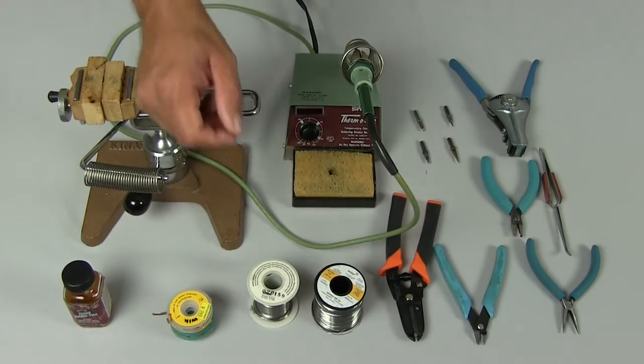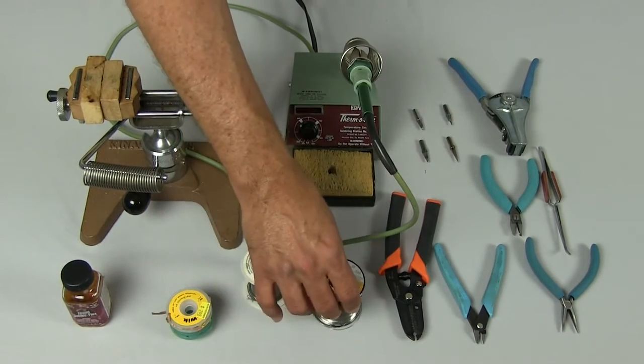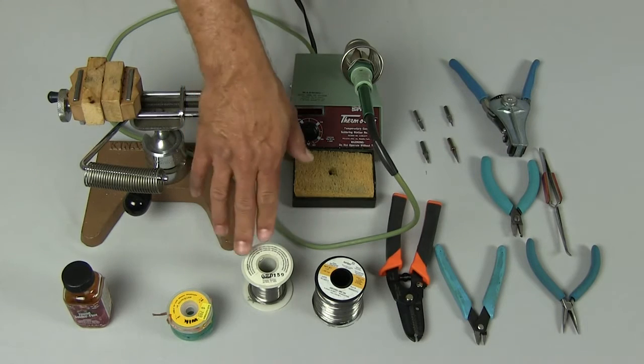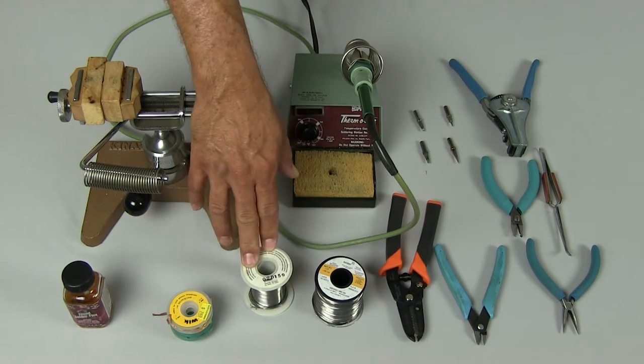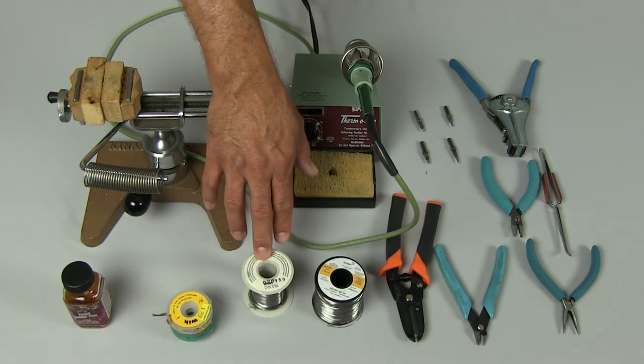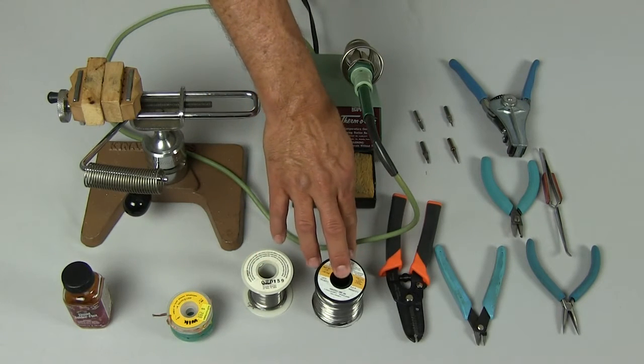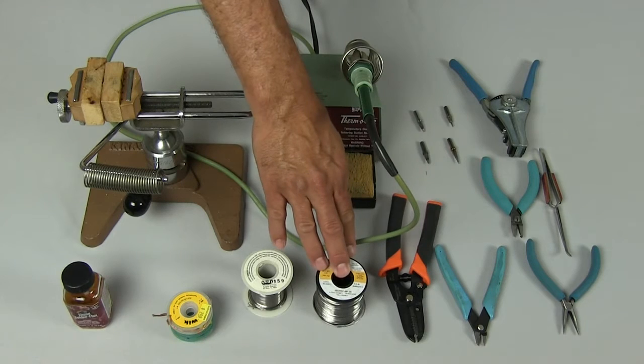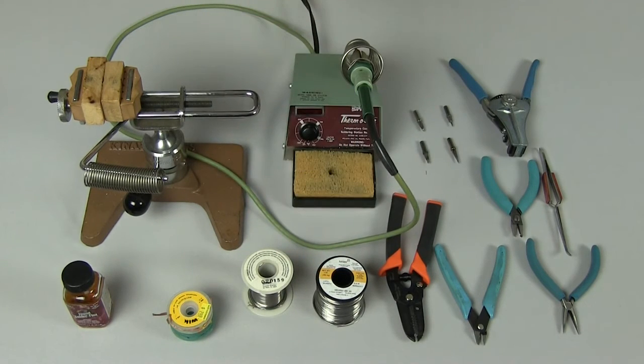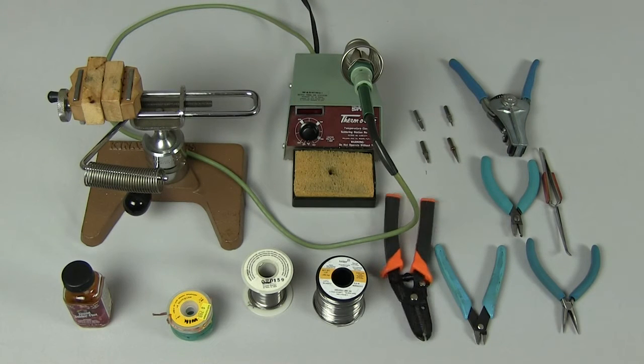Next, we're going to talk about solder. Here I have two different size solder wires. This one is a flux core .031 inch diameter solder wire, and this one is a .015 inch diameter solder wire.